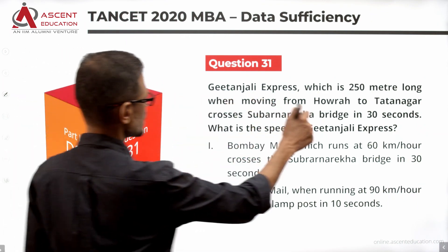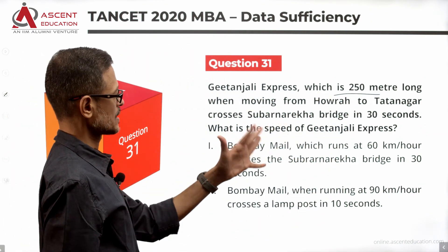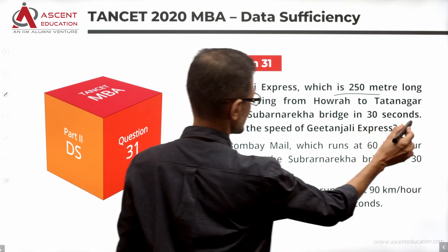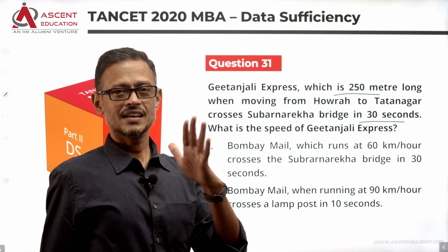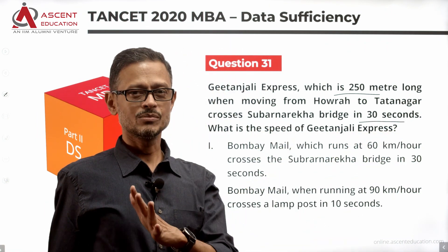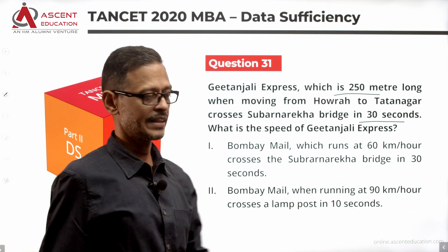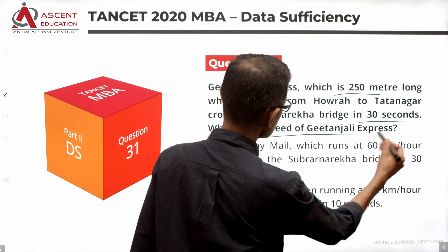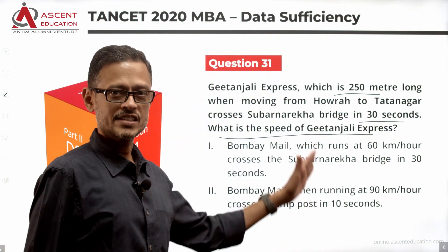The Geetanjali Express, which is 250 meters long, when moving from Howrah to Tatanagar, crosses the Subarnarekha Bridge in 30 seconds. So the train length is 250 meters, it crosses the bridge in 30 seconds. We are asked: what is the speed of this Geetanjali Express? We have two statements.